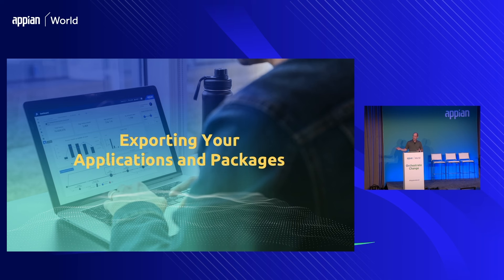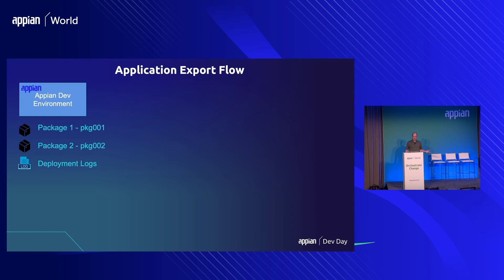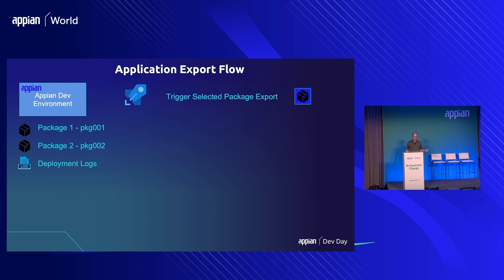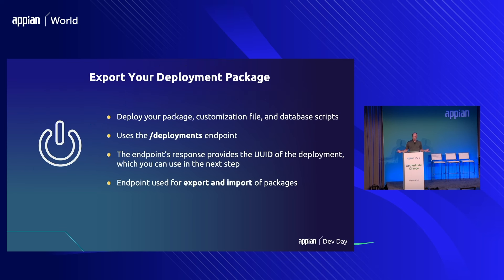If you're using the API, you're generally following the export, import, and deploy process. You have your application with packages set up, and we saw how to determine the application or package unique ID — we need that information to deploy the app with the scripted process. This shows triggering the package export — it could be from a Python script, from an Azure pipeline, or from GitHub Actions — basically we trigger that export process.